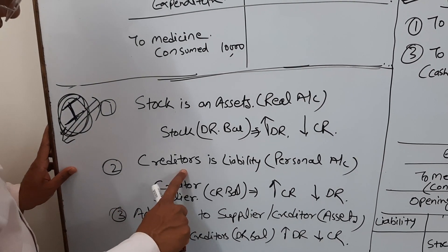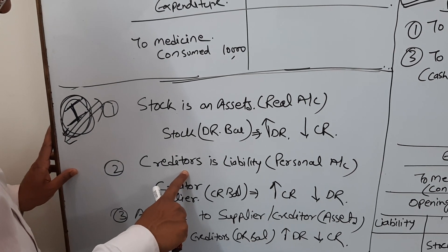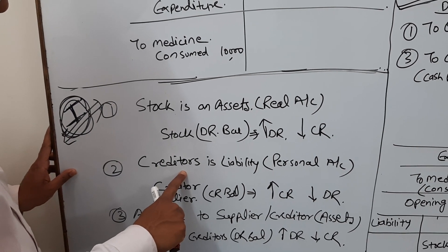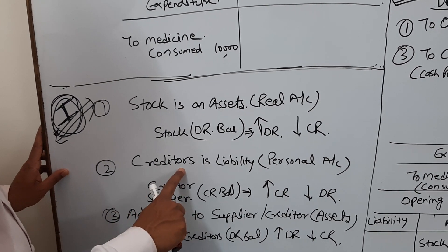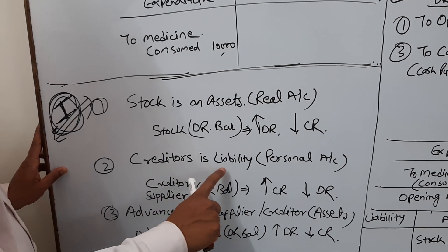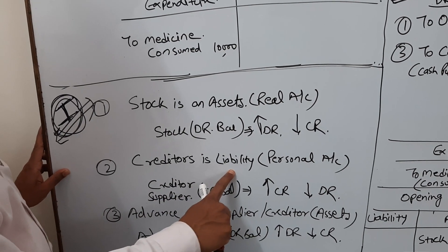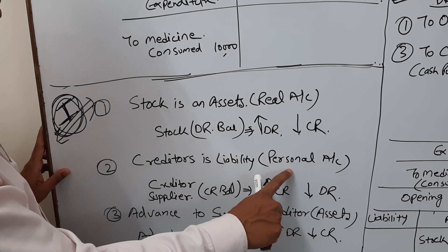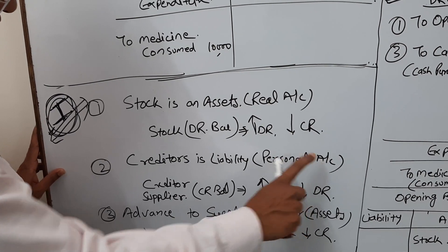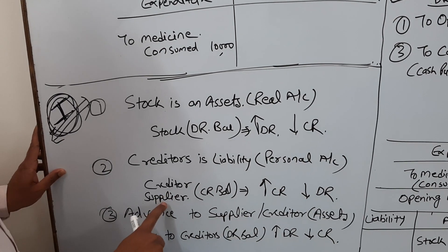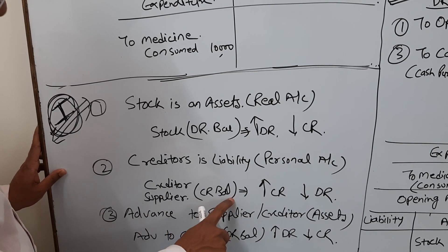Second concept: creditors, also termed as suppliers. Creditors or suppliers are a liability. They are personal accounting in nature, having a credit balance.